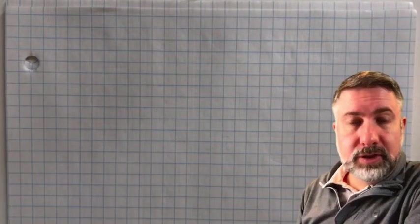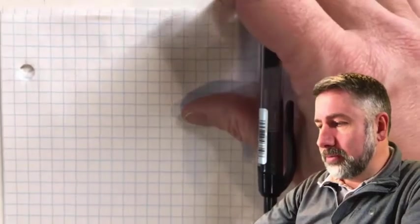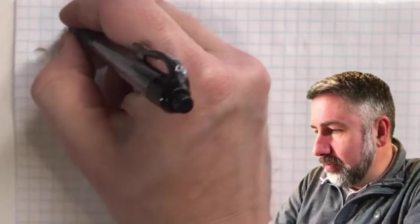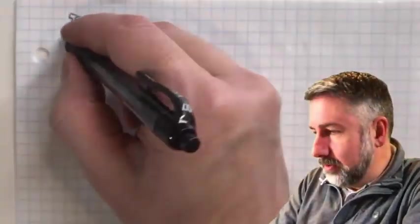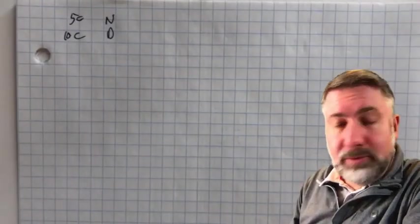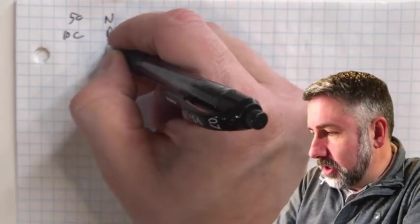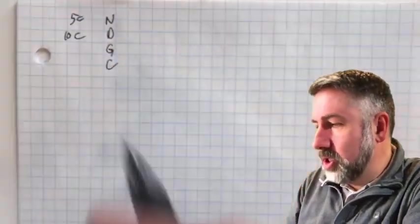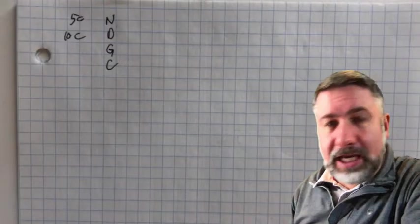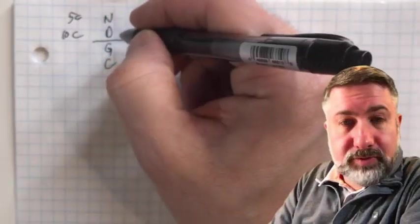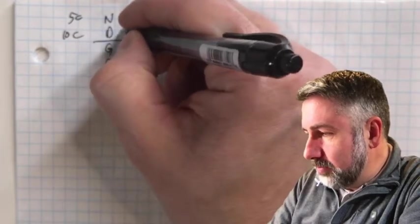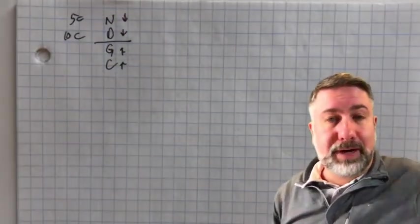This video walks through the entire design process for the third question of assignment three, which was to design a gumball machine. The machine has two inputs: five cents (a nickel) and ten cents (a dime). If it receives fifteen cents it dispenses a gumball, and if it receives twenty cents it dispenses change. Nickels and dimes are the inputs; gumballs and change are the outputs back to the user.